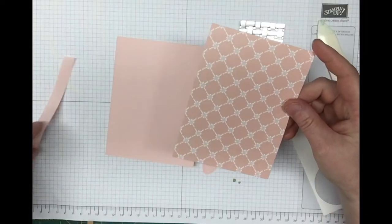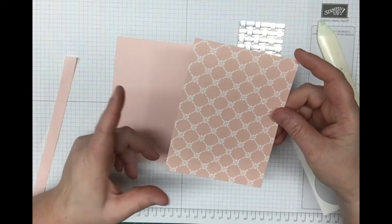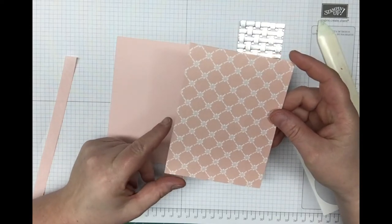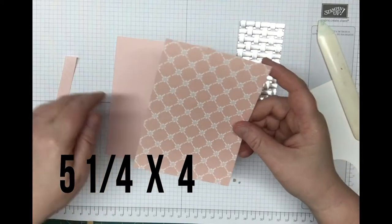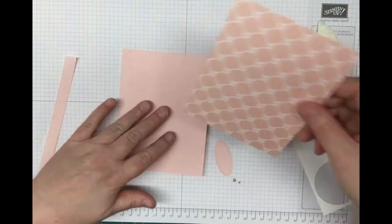We're going to take Fresh Florals. This is the powder pink, and this one here is cut at 5.25 by 4. This is just going to layer on top of your card.